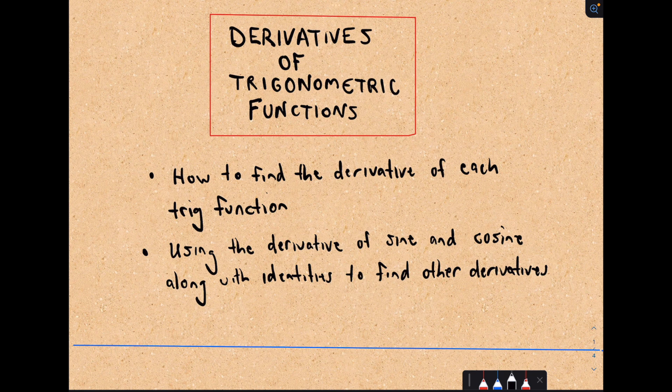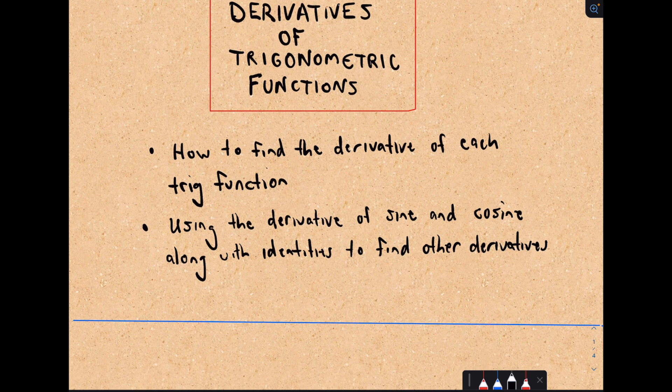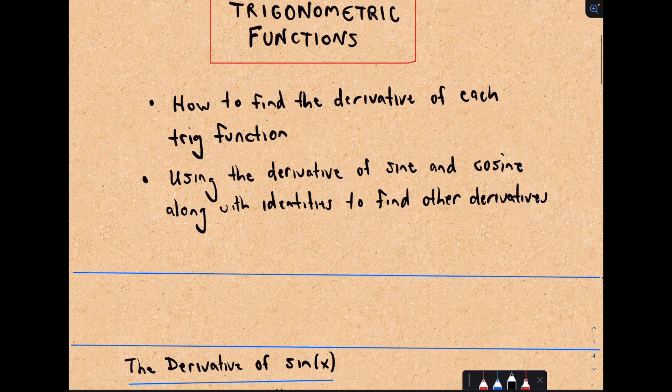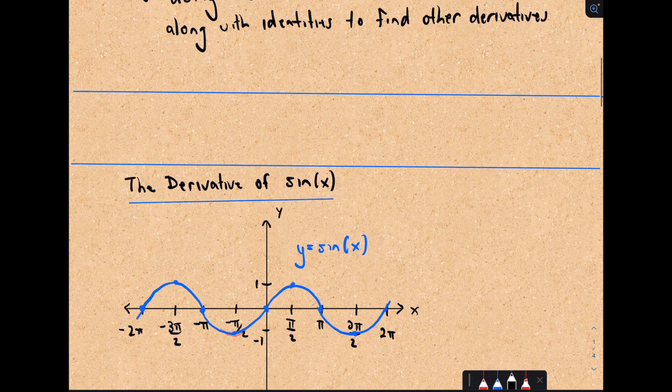Hey everybody, this is Patrick JMT, and I'm partnering with Chegg. Here we're going to talk about derivatives of trigonometric functions. We'll start off giving a graphical description of what the derivative of sine could be, then talk about the derivative of cosine. Once we know those, we can find the derivatives of the other trig functions, and then we'll also cover some random examples.